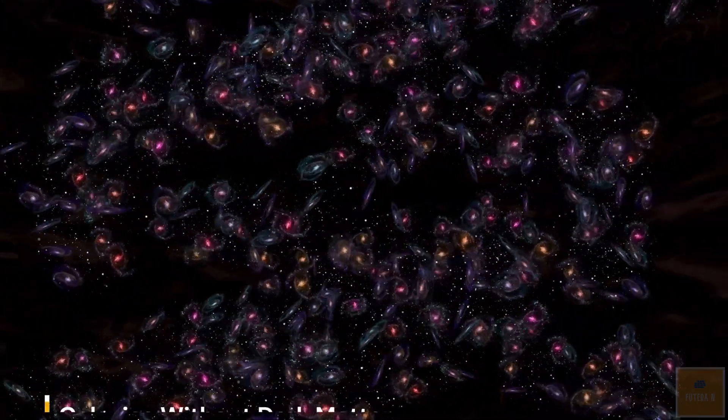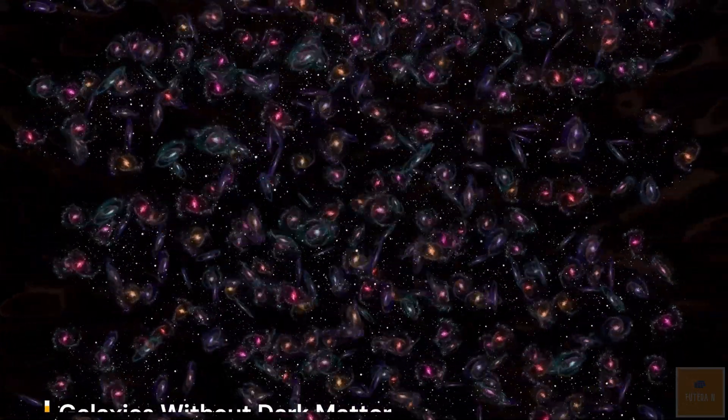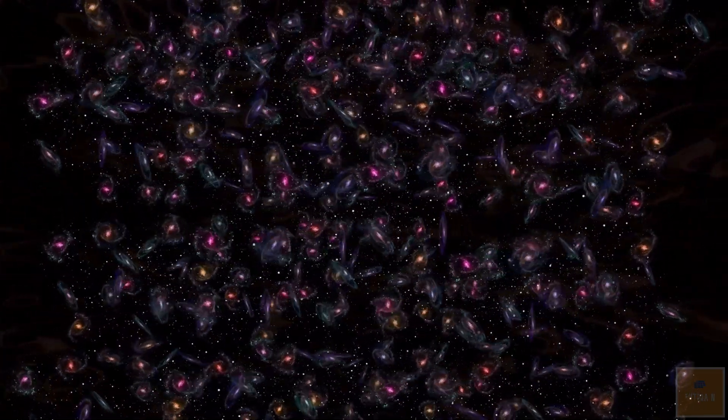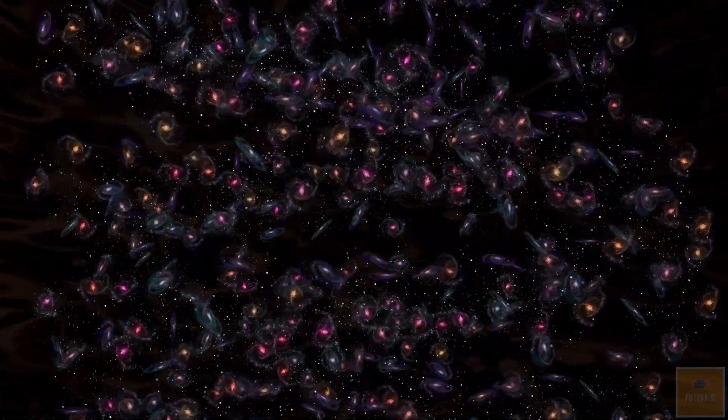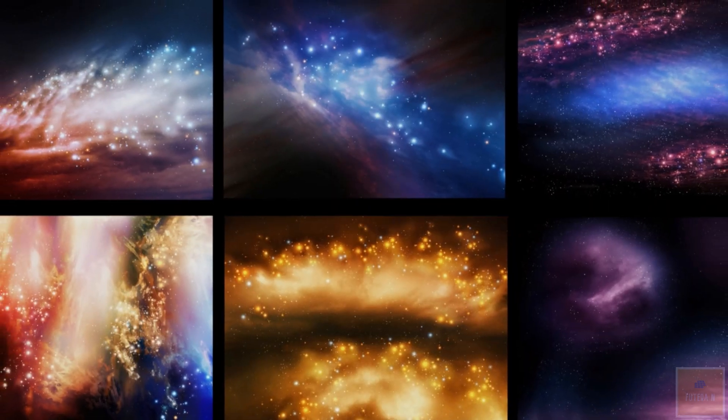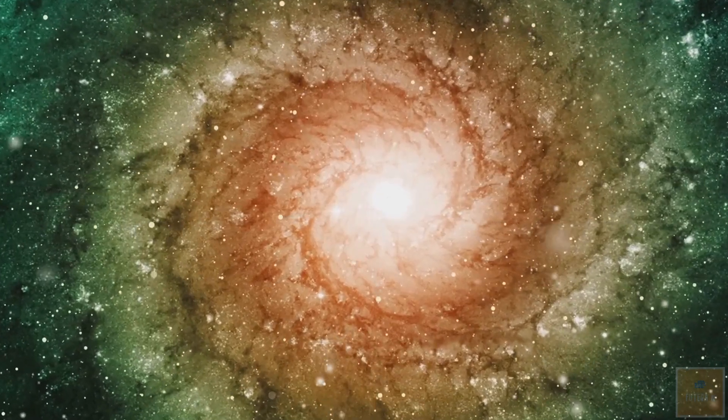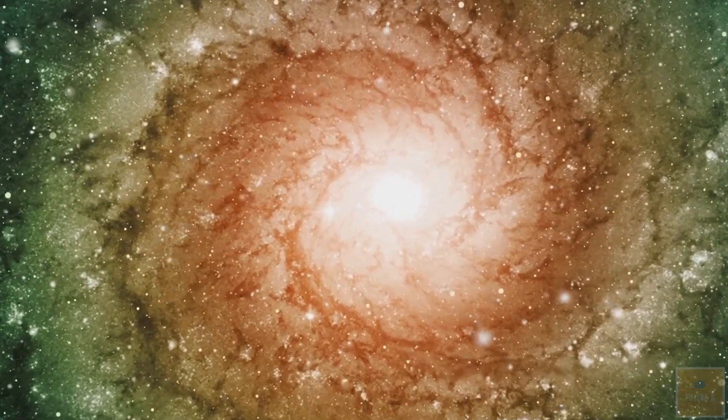Dark matter is typically considered the invisible glue that holds galaxies together, but scientists have observed galaxies having much less dark matter than expected. DF2 and DF4 are galaxies with very low velocity dispersions, indicating little or no dark matter. This discovery challenges conventional theories of galaxy formation and evolution, as galaxies are thought to form within vast halos of dark matter.